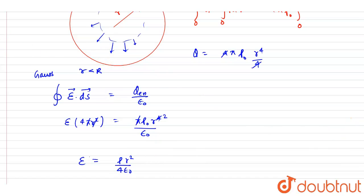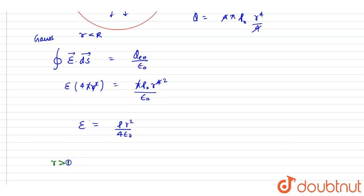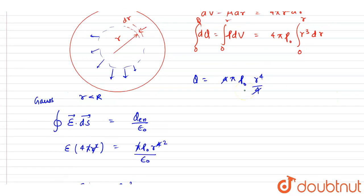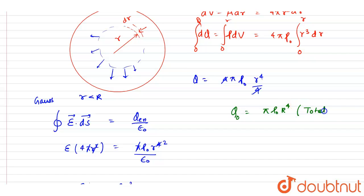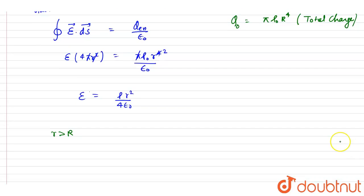Now for an outside point, the charge enclosed becomes fixed — it is the total charge Q naught, evaluated at r equals capital R: Q naught equals pi rho naught R to the power 4 divided by 4. For the exterior point, the charge enclosed in Gauss's law is always this total charge on the sphere.